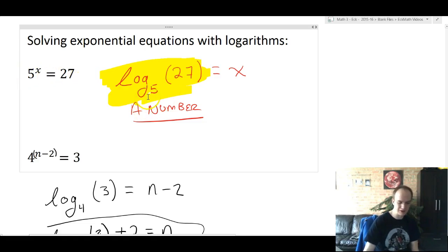I said at that time that log base 5 of 27 is just a number. If you look at the equation, we'd expect that number would maybe be a little bit more than 2, since 5 squared, 5 to the second would be 25, so maybe our x is going to be a little bit more than 2, but we just didn't know how to get it.